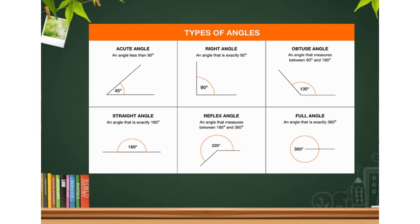A full angle means an angle that is exactly 360 degrees. So all these are the types of angles.